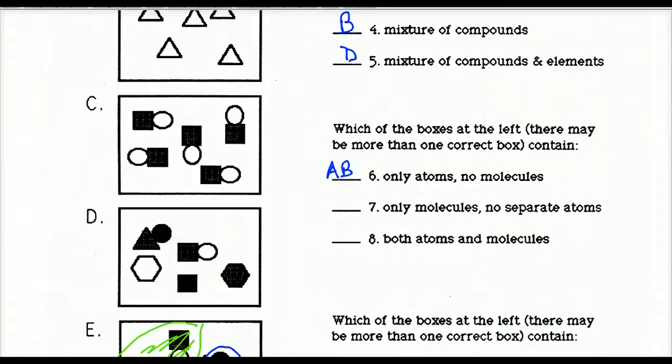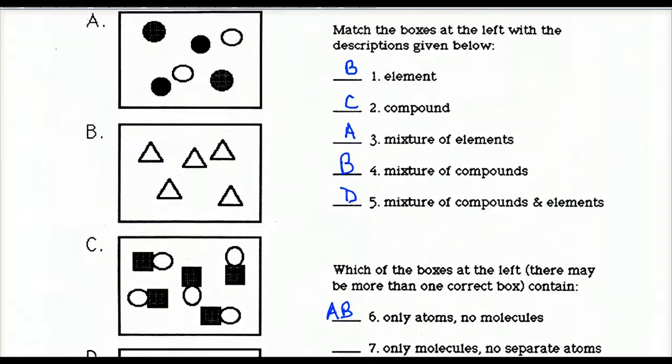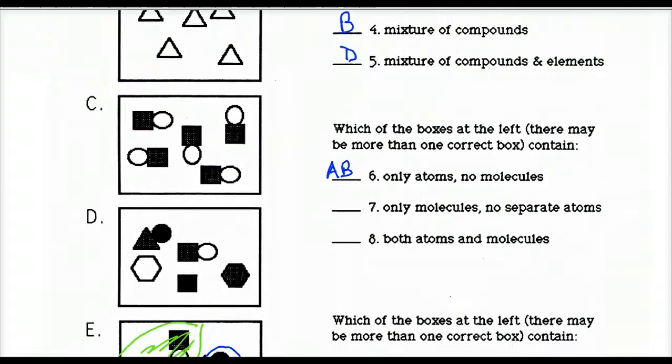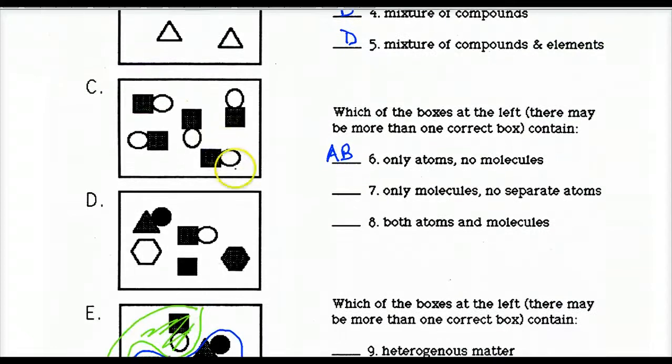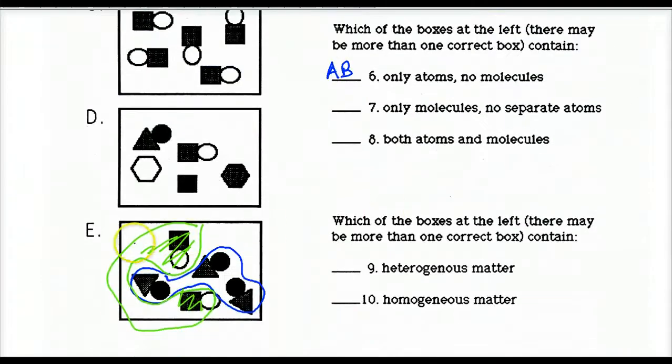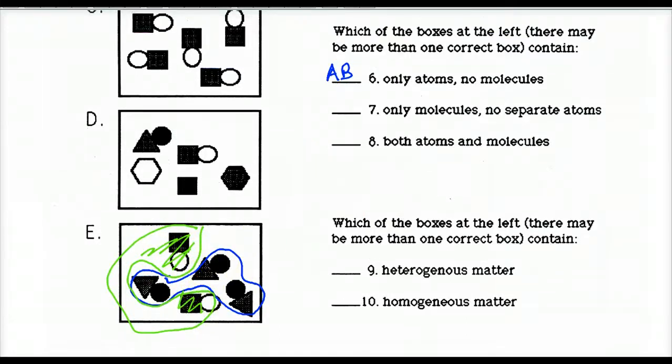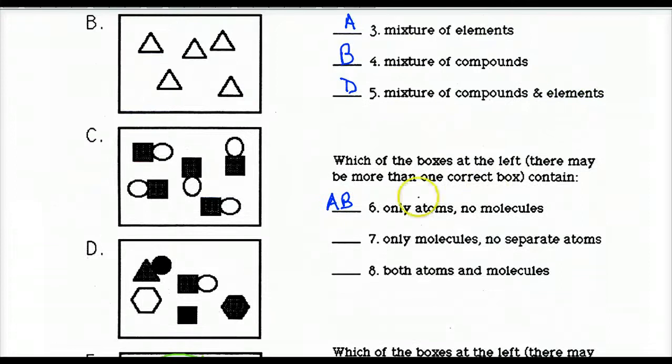And number seven, only molecules, no separate atoms. So who are bonded together, but only molecules. Which they really could have said, only a compound. So there is definitely only molecules. However, probably you couldn't have said that because E is also molecules. This is a mixture of two different compounds. So I would say C and E.